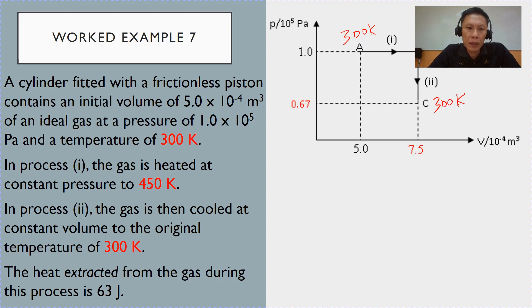You are also told that the total heat extracted from the gas during this process is 63 Joules. So, the heat supplied to the system, since it is extracted, is minus 63 Joules. We will make use of this data later.